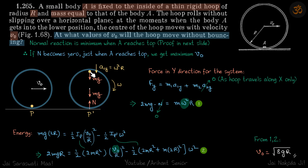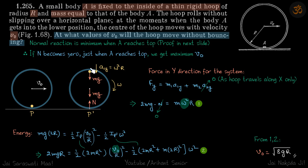The only acceleration in the y-direction is due to mass A, which is ω²r. Writing the force equation: F_y = m₁a₁y + m₂a₂y. For the loop, a₂y = 0 since it travels along x only. So F_y = 2mg − N = mω²r. Setting N = 0 gives our first equation for omega.